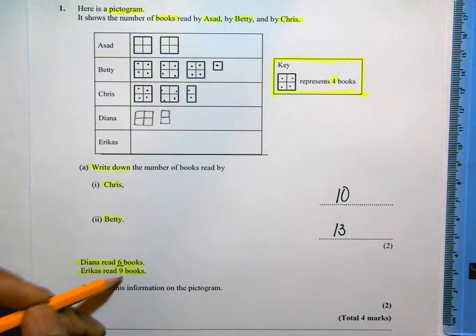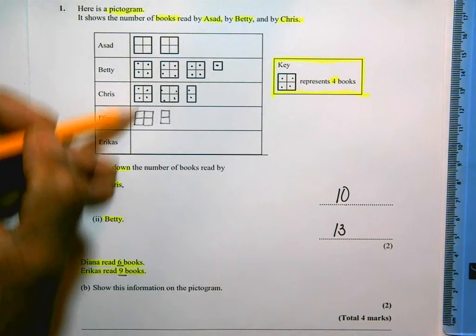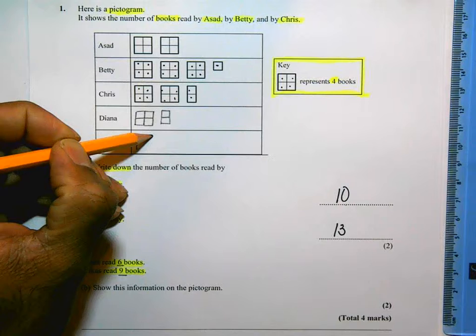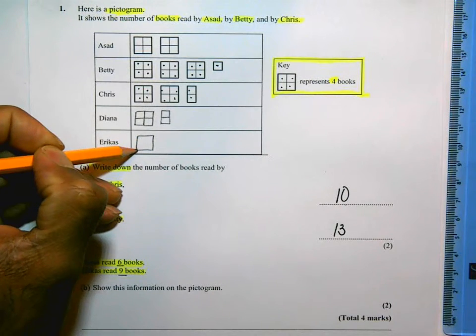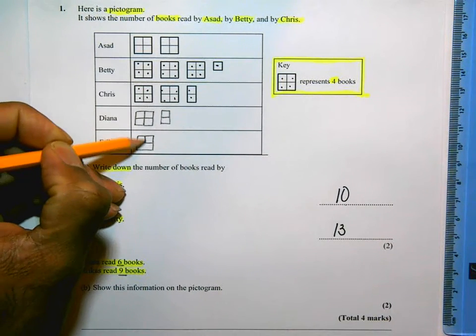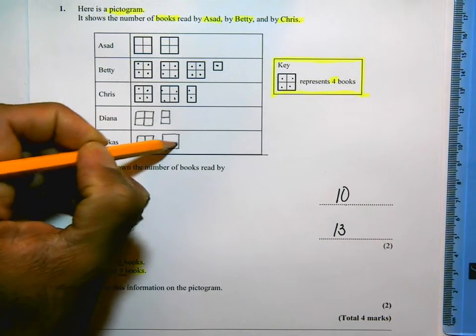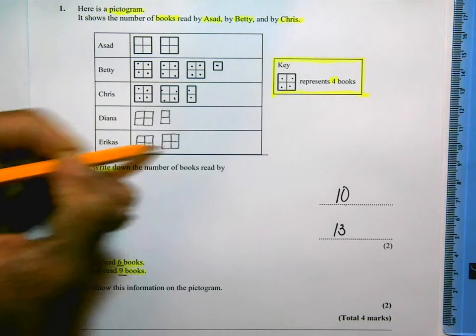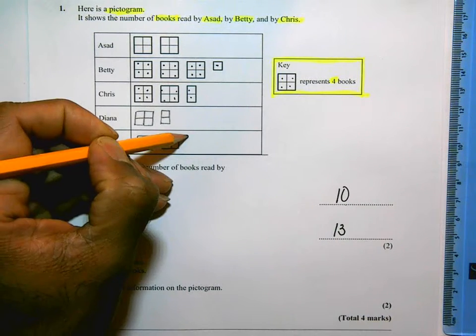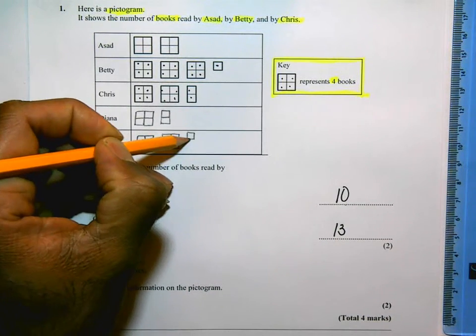Eric has read nine books. So let's see. Four is one of these symbols. If I draw another one, that makes eight. So I need to draw another one. So that's four plus four is eight. And then I need to draw one more tiny box here.